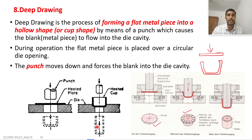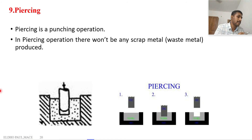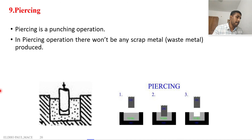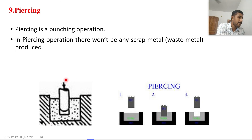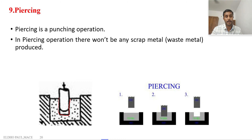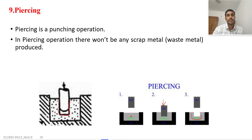We will study deep drawing in detail in the fifth module. The next operation is piercing, where a cavity is created by moving the material using a punch — there is no removal of material. The punch is forced against the material kept in the die cavity, and a cavity is formed by the piercing operation. There is no removal of material when creating a cavity by piercing.